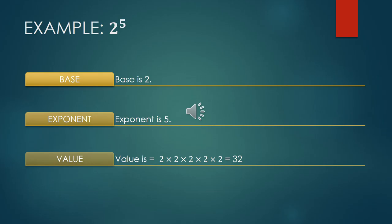How can we find out the value? When we multiply 2 five times, I get 32. It is the value.